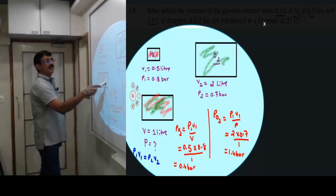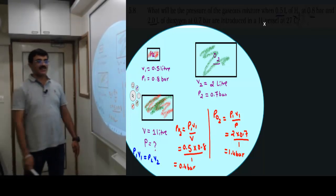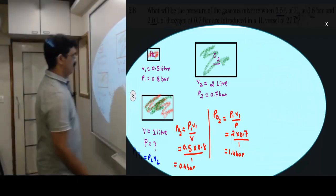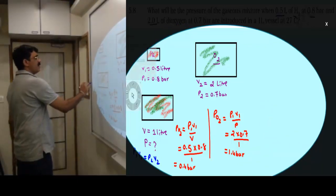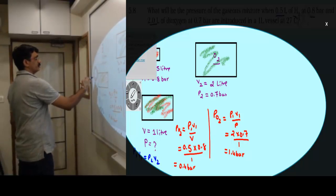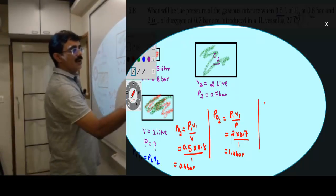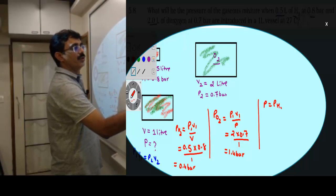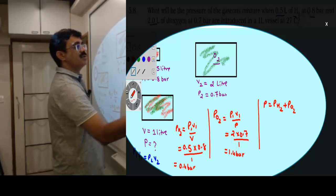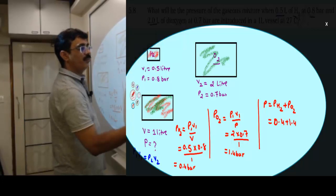If I want to find pressure of hydrogen after shifting, pressure of H2 equals p1 v1 upon final volume V. Initial volume was 0.5, pressure was 0.8, final volume is 1. This gives 0.4 bar. Similarly, pressure of oxygen equals 2 liter into 0.7 upon 1, which gives 1.4 bar. Final pressure equals pH2 plus pO2, equals 0.4 plus 1.4.